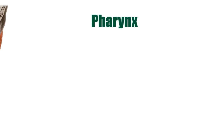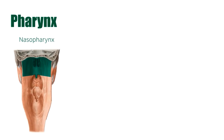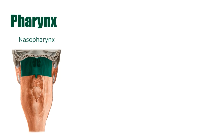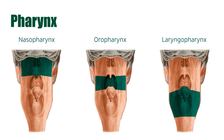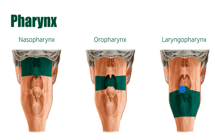Based on these anterior relationships, the pharynx can be divided into the nasal pharynx, seen here highlighted in green, the oral pharynx, and the laryngopharynx. The nasal cavities communicate with the nasal pharynx through these holes here, known as the choanae. The oral cavity communicates with the oropharynx through the oropharyngeal isthmus, and the larynx communicates with the laryngopharynx through the laryngeal inlet.